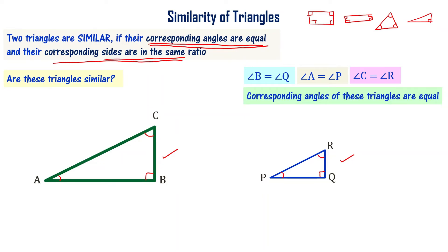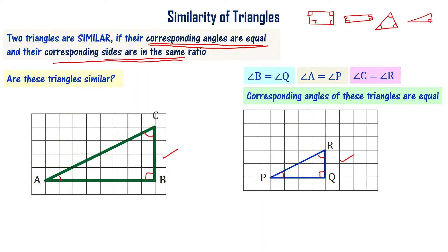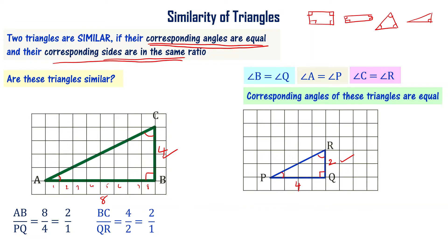Now the question is whether the corresponding sides are in the same ratio. AB is 8 units and PQ is 4 units, so AB by PQ is 8 by 4, which equals 2 to 1. BC and QR are also in the same ratio, 2 to 1.